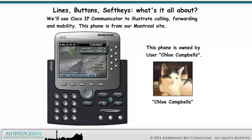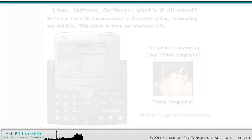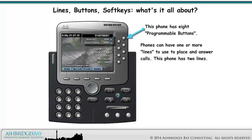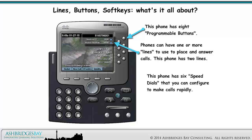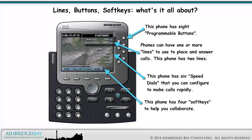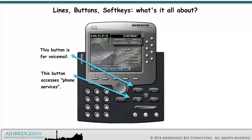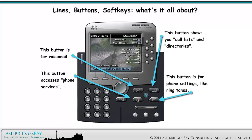This phone is owned by user Chloe Campbell. This phone has eight programmable buttons. Phones can have one or more lines to use to place and answer calls — this phone has two lines. This phone has six speed dials that you can configure to make calls rapidly, and four soft keys to help you collaborate. The buttons include voicemail, phone services, call lists and directories, and phone settings like ringtones.